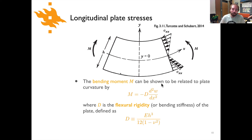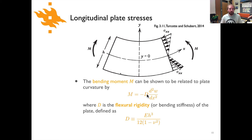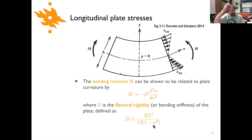The bending moment M can be shown to be related to the curvature as: M = −D·(d²W/dx²), where D is the flexural rigidity or bending stiffness of the plate. It's a material property: D = E·H³ / (12·(1−ν²)), where E is Young's modulus, H is the plate thickness, and ν is Poisson's ratio. Note that thickness appears cubed, so as you make the plate thicker its rigidity increases very quickly.